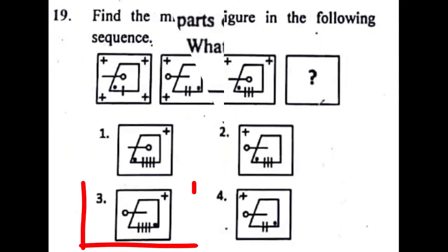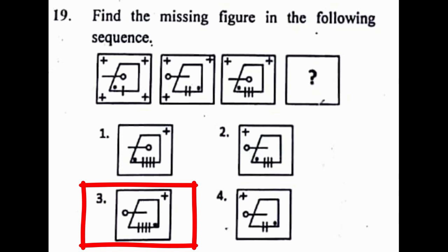Problem number 19: There is a given question series of 3 figures. We will have to find out the answer figure at the 4th place. Option 3 is the missing figure at the 4th place.